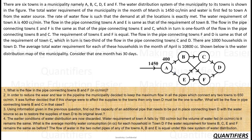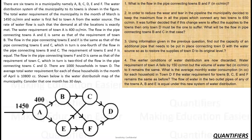That is the first key learning to take. There are some constraints given that I'll have to work through. Let me start solving and see where we can reach. The flow in the pipe connecting A and E is the same as the requirement of town B.